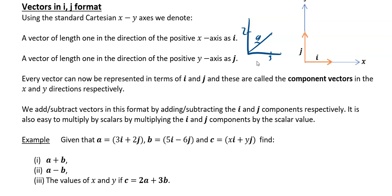Then you could say a equals 3i plus 2j, where i means one unit to the right and j means one unit vertically.